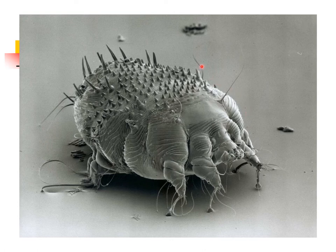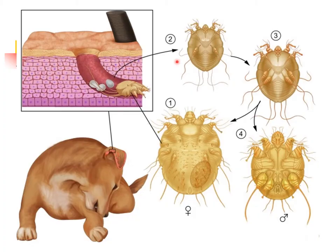This is a scanning electron micrograph of the burrowing mite Sarcoptes scabiei. Mange in dogs is also known as sarcoptic mange or canine scabies, caused by Sarcoptes scabiei var. canis. This is a type of infestation considered to be highly contagious in dogs and is found worldwide. This diagram shows the life cycle of Sarcoptes scabiei.